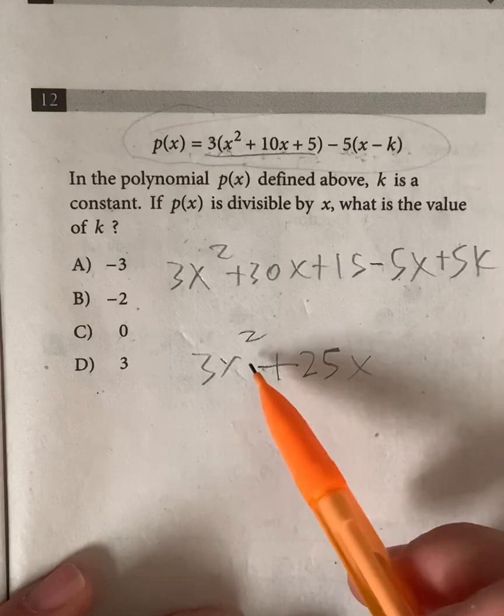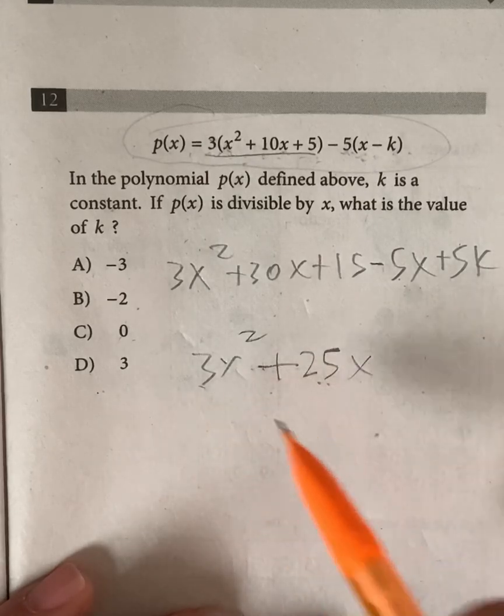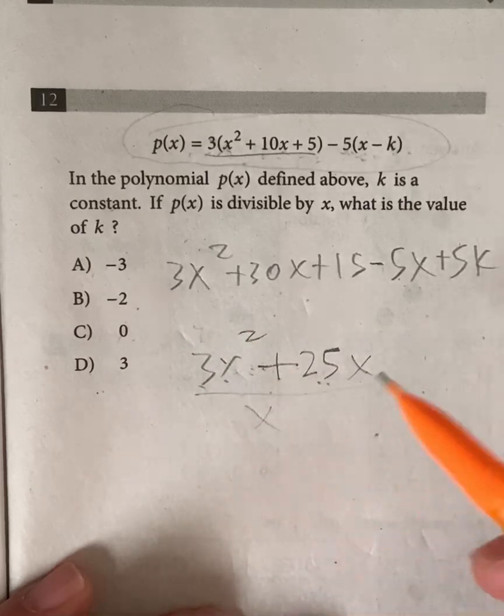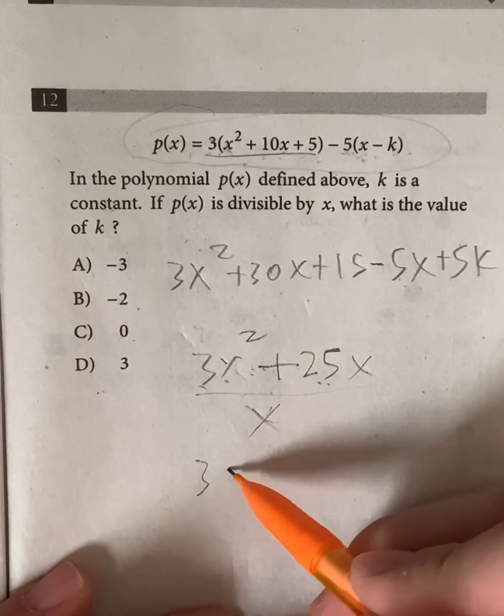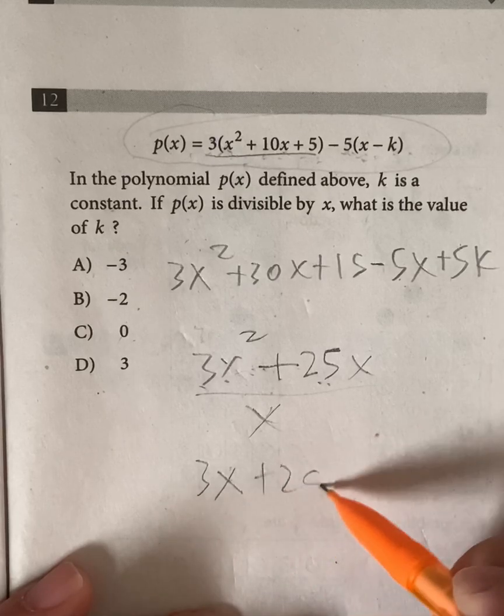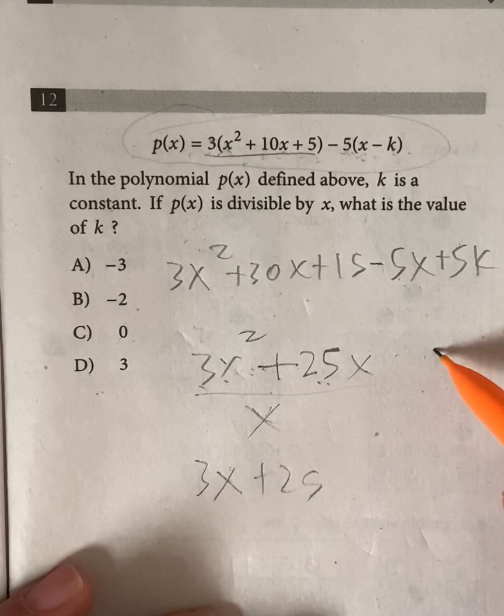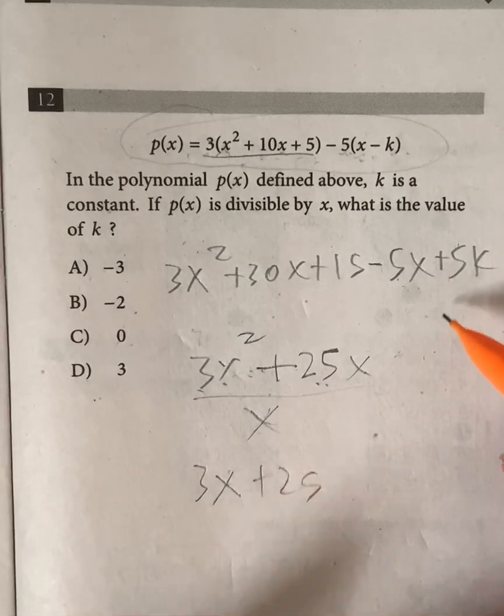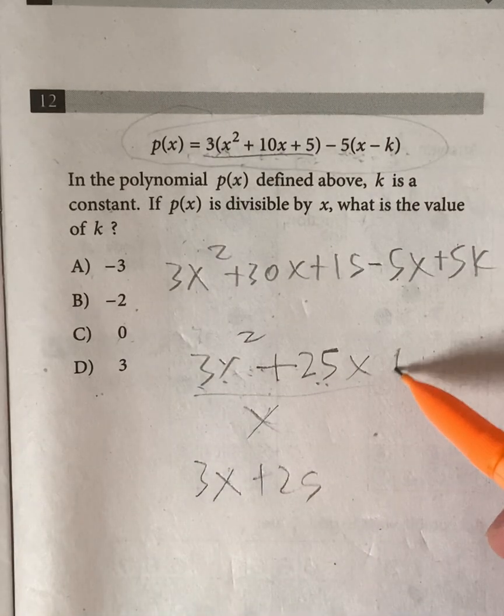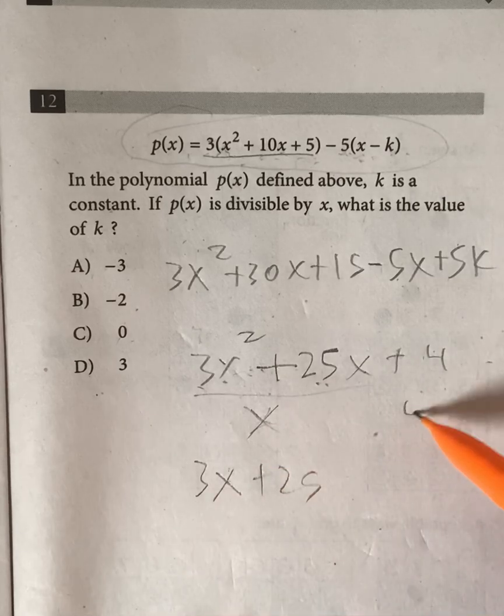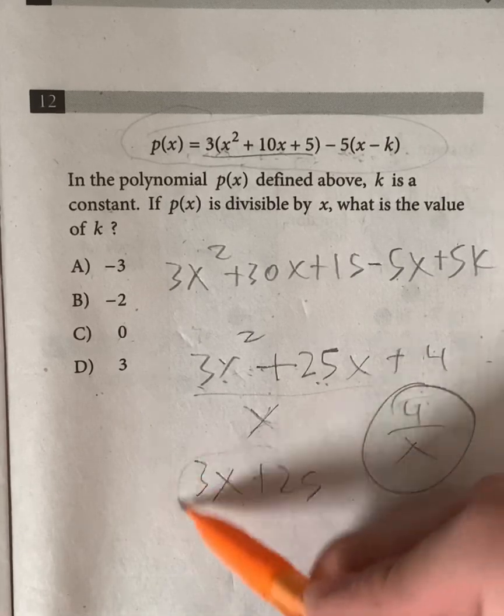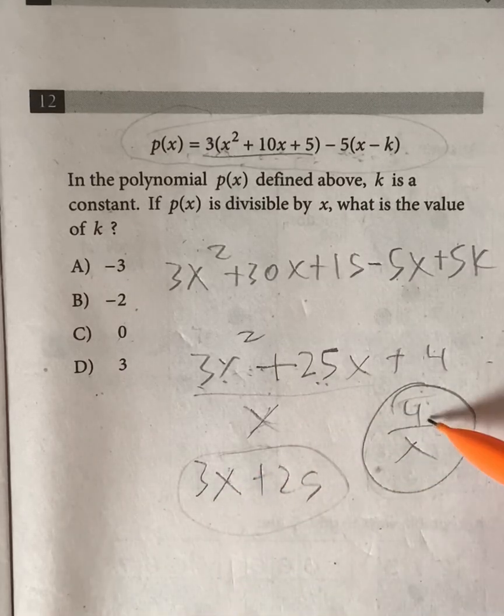So because we want this to be divisible by x, this is already divisible by x. If we divided by x, we would just be left with 3x plus 25. But then if we had another term, for example, a constant, like let's just say, randomly, this is not exactly the answer. But let's just say we have plus 4. 4 divided by x does not completely factor. This does not give us a whole number such as 3x plus 25 like that.